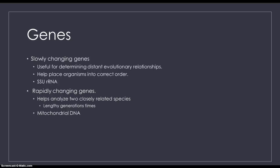However, there are swiftly changing genes, like mitochondrial DNA, that can be used to analyze two closely related species with lengthy generation times because they have very similar DNA.